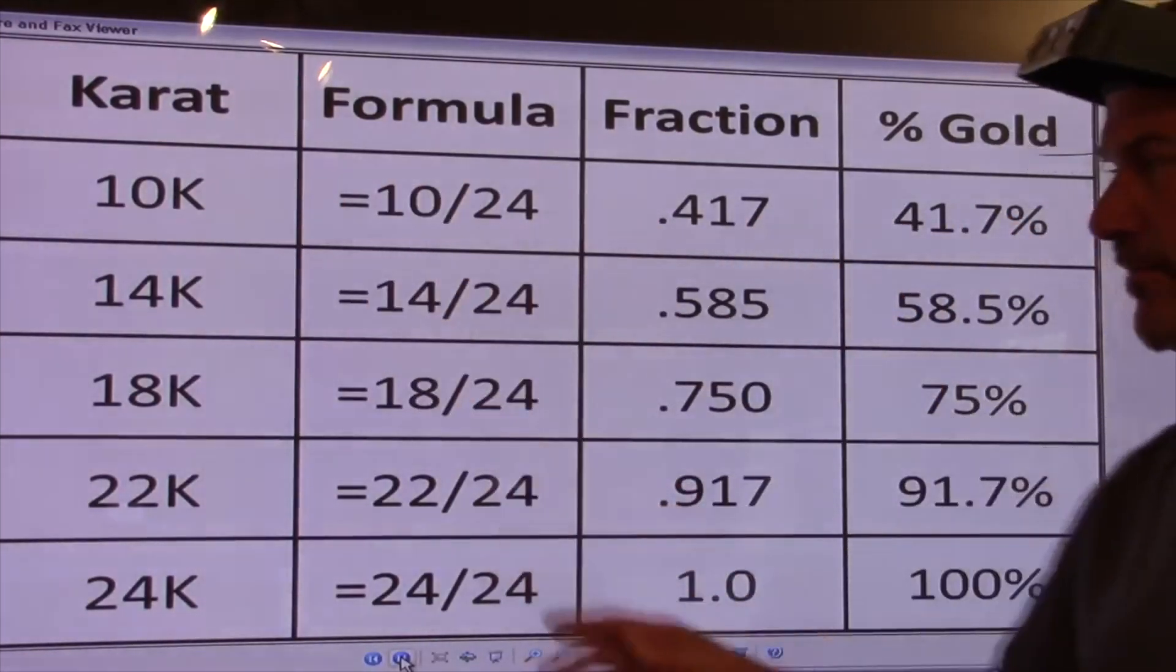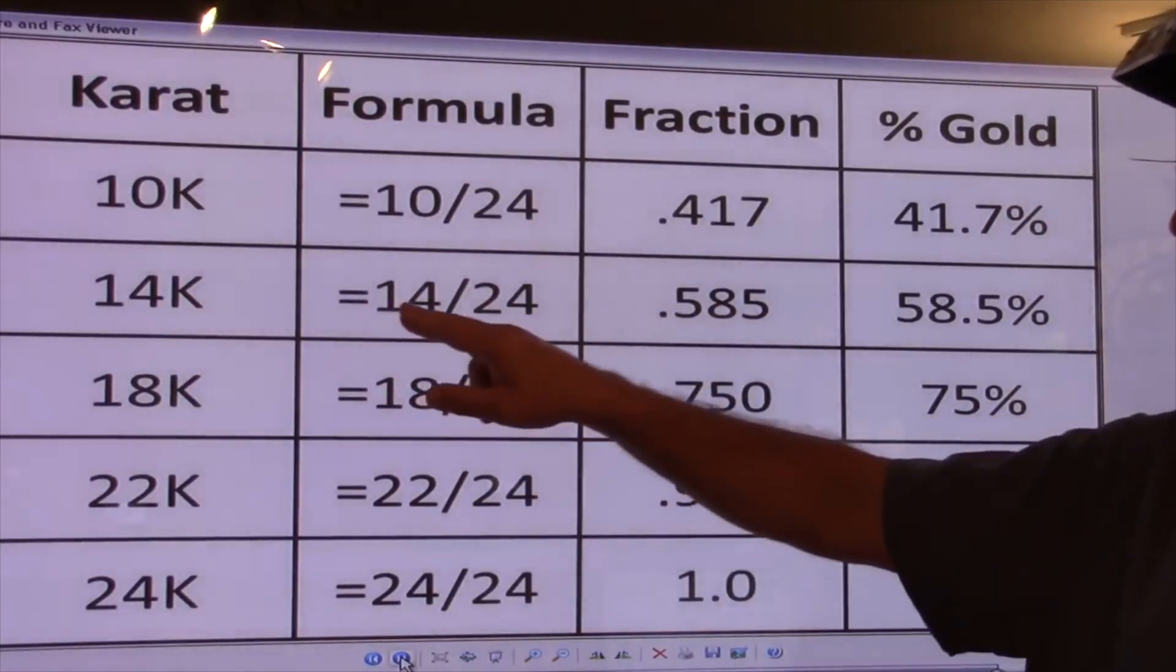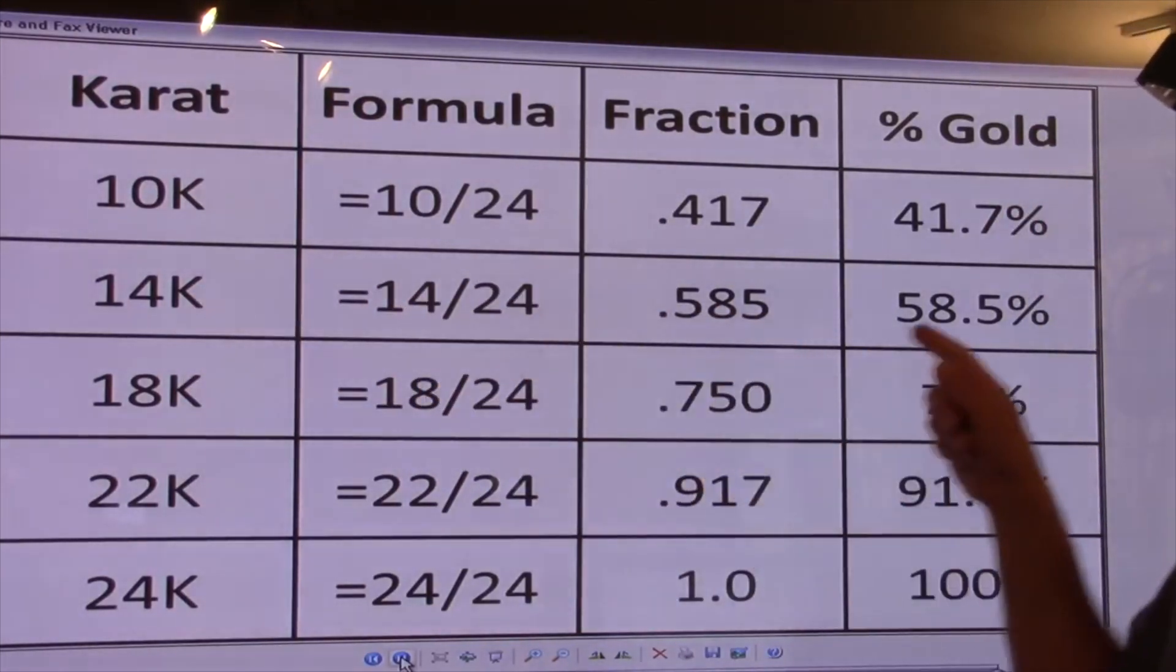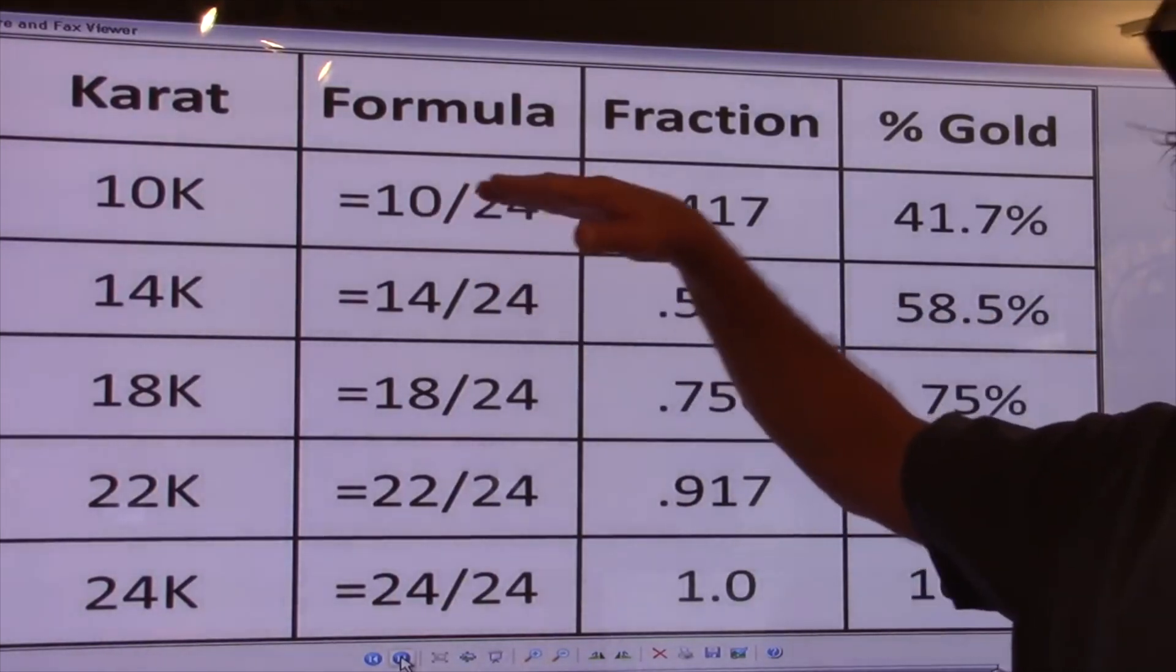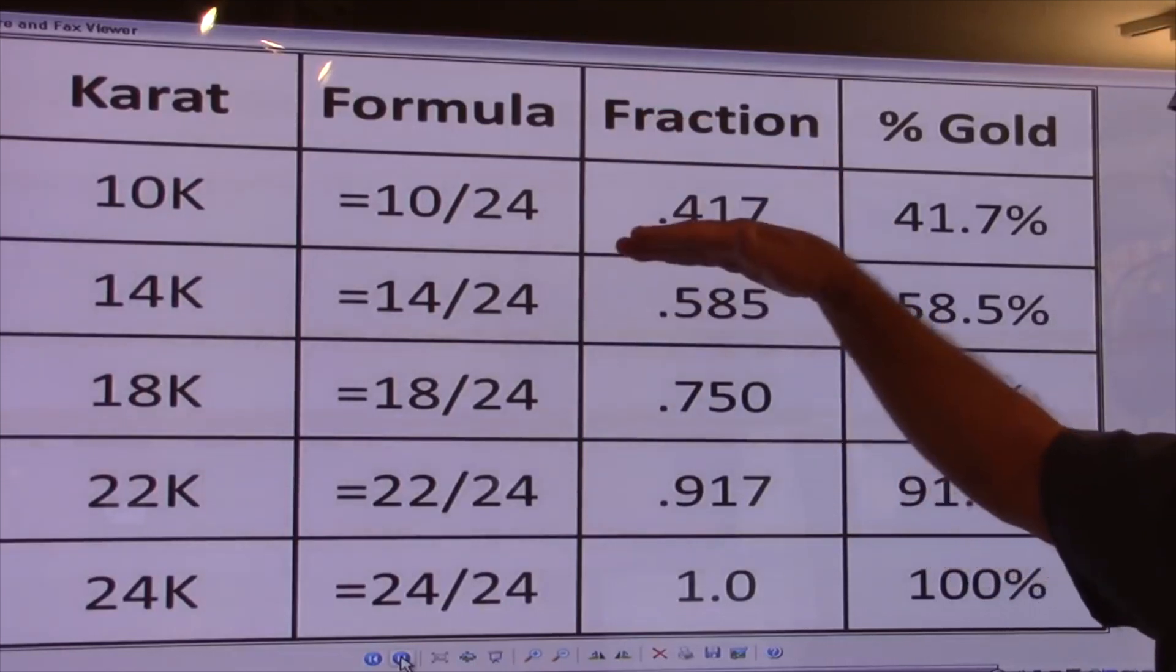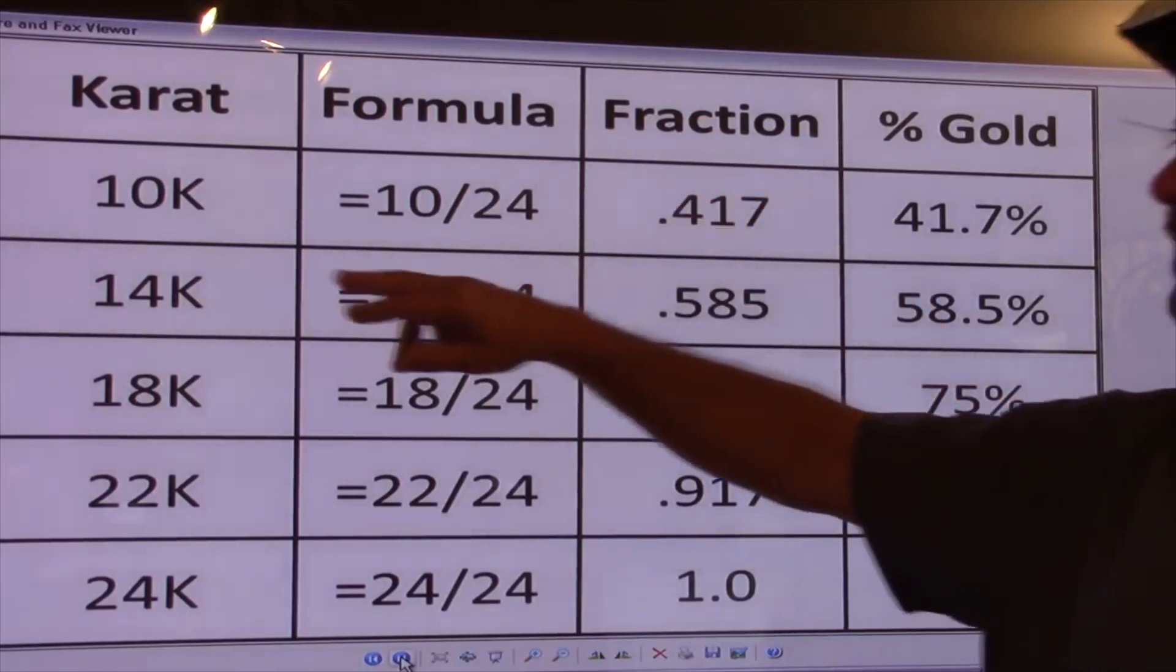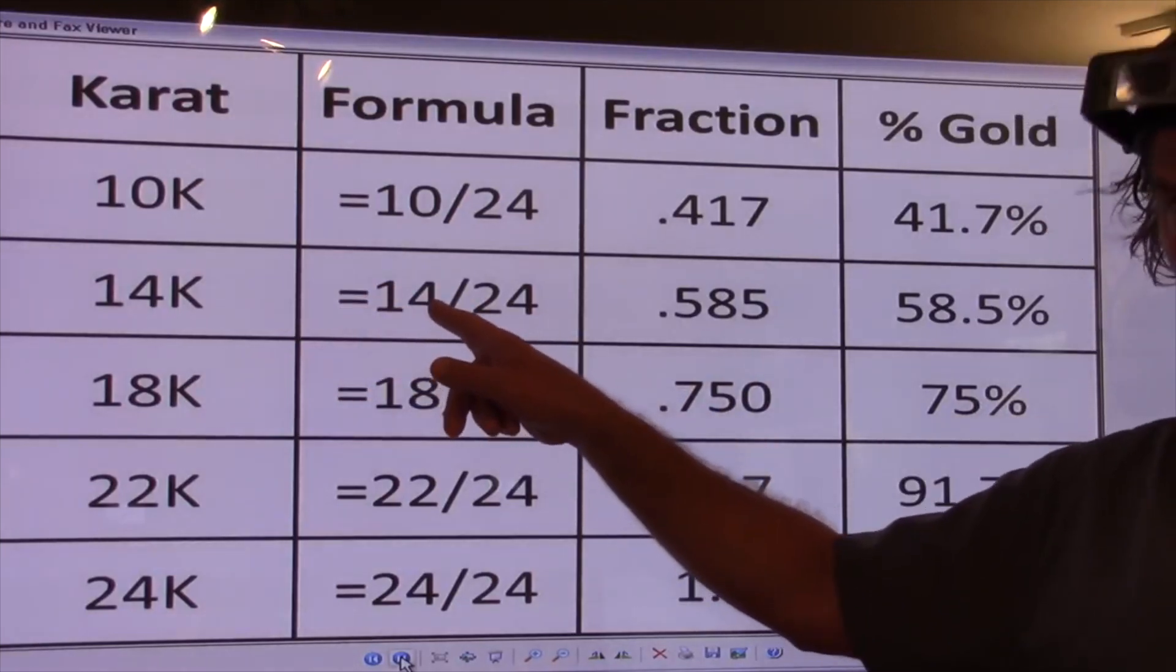417 and 10 karat mean the same thing. 14 karat, 0.585, mean the same thing. It means 14 parts pure of 24, or almost 60% pure. So 10 karat, if you just round it down, 40%. 14 karat, rounded up a little bit, 60%. That's why this is more expensive. It's got four more parts of pure gold in it.